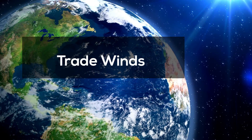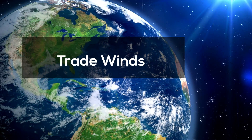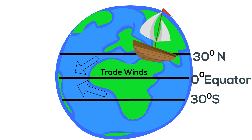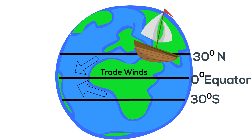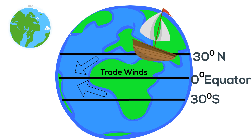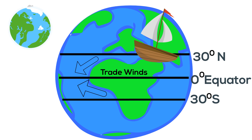Next are the trade winds. They blow to the southeast in the south and northeast in the north. In both hemispheres, the winds that blow from 30 degrees latitude almost to the equator are called trade winds. The Coriolis effect causes the trade winds to curve to the west in the northern hemisphere, and to the east in the southern hemisphere.